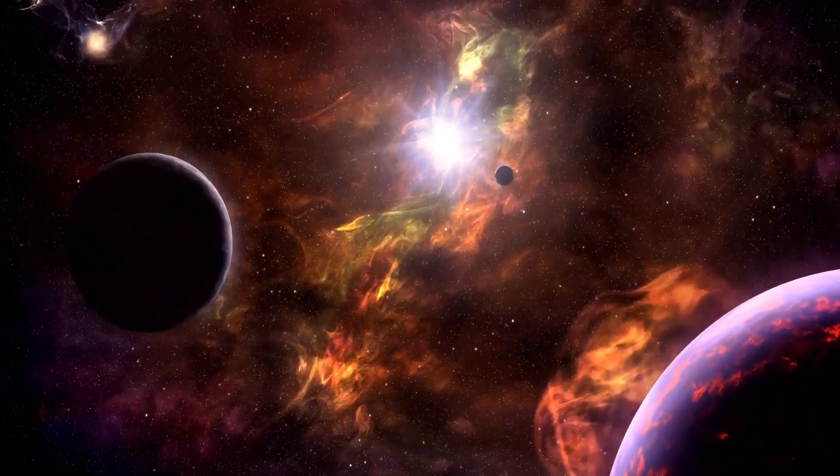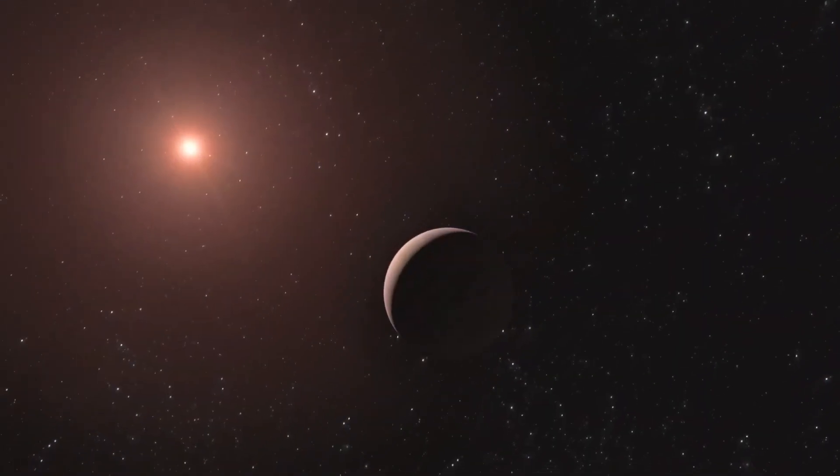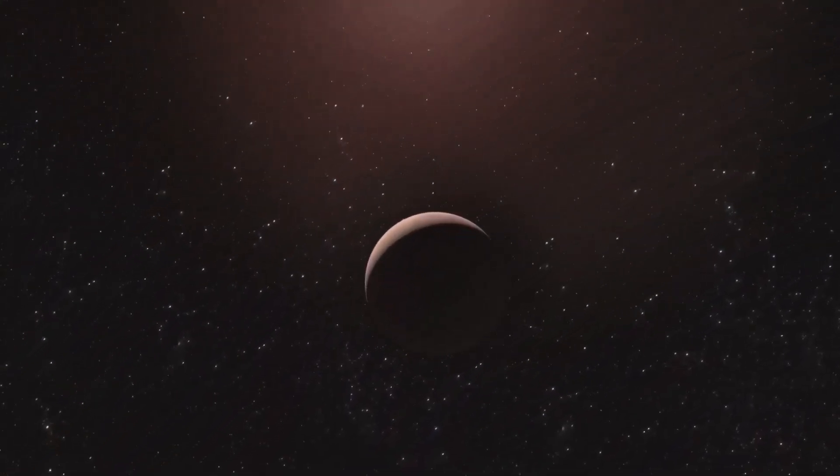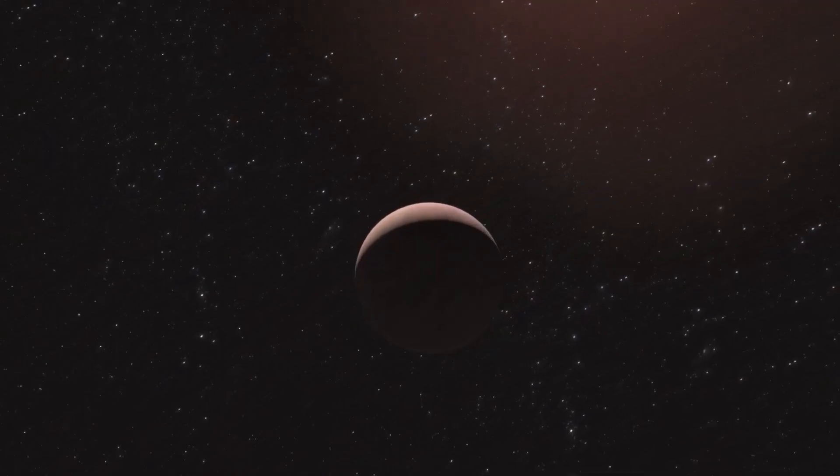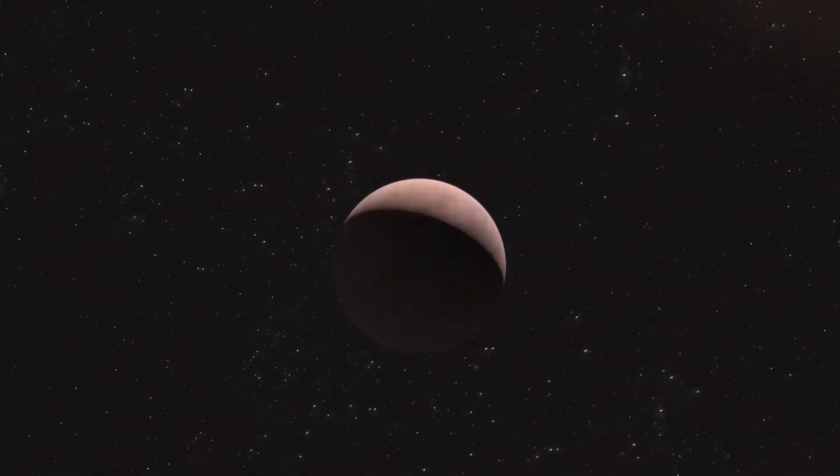This brown dwarf emits a faint reddish glow. This is due to a unique form of fusion that occurs in objects that are hefty but not hefty enough to fuse hydrogen like stars. Adding to the oddities, Webb observed that this brown dwarf has clouds made of a sandy silicate material, something never seen before in objects of this kind.